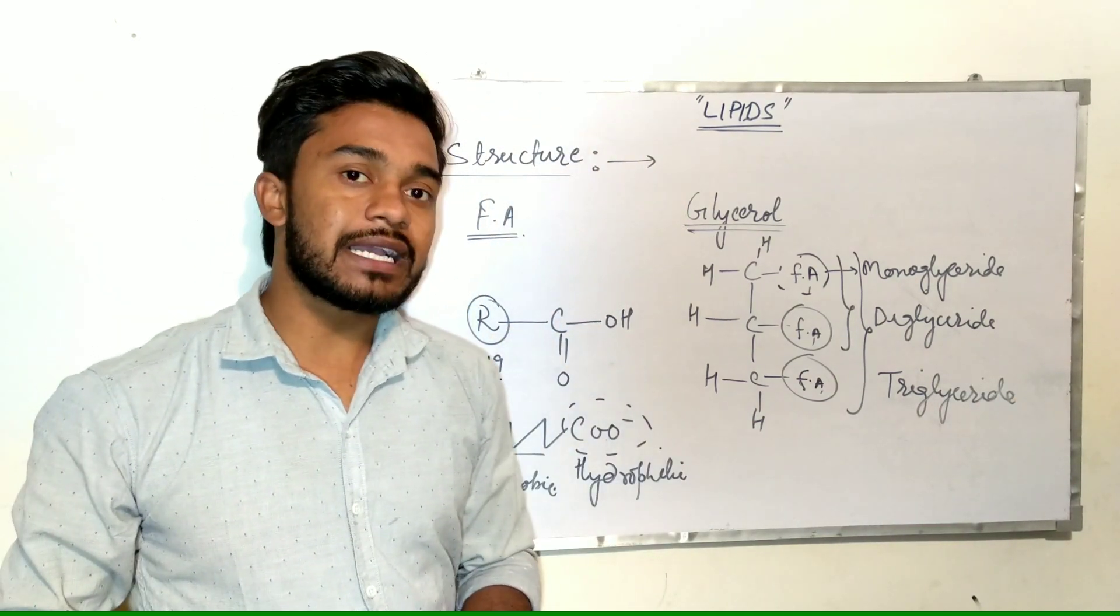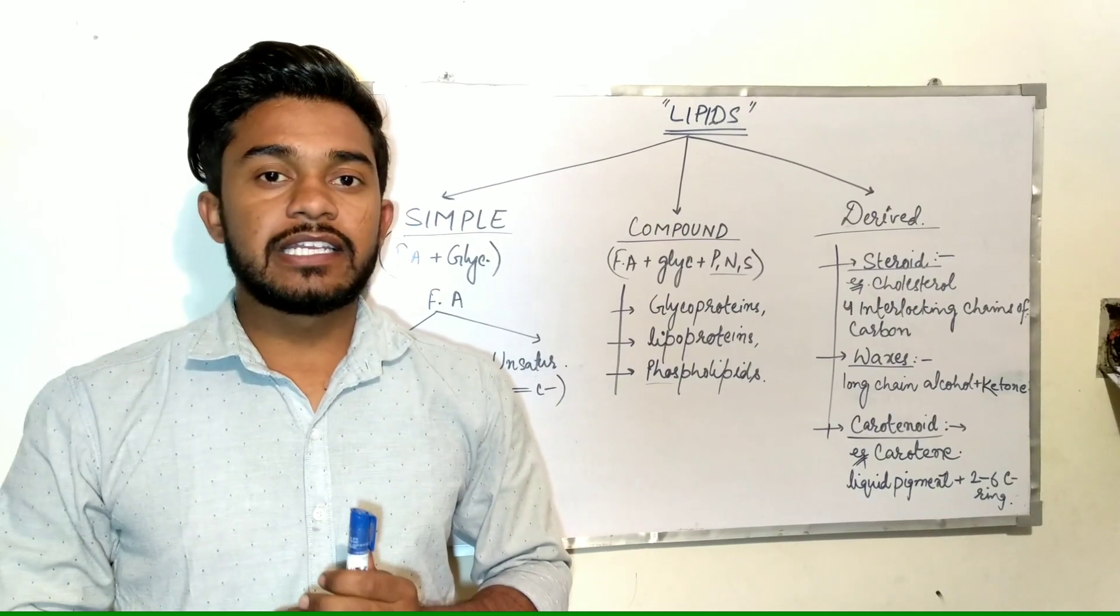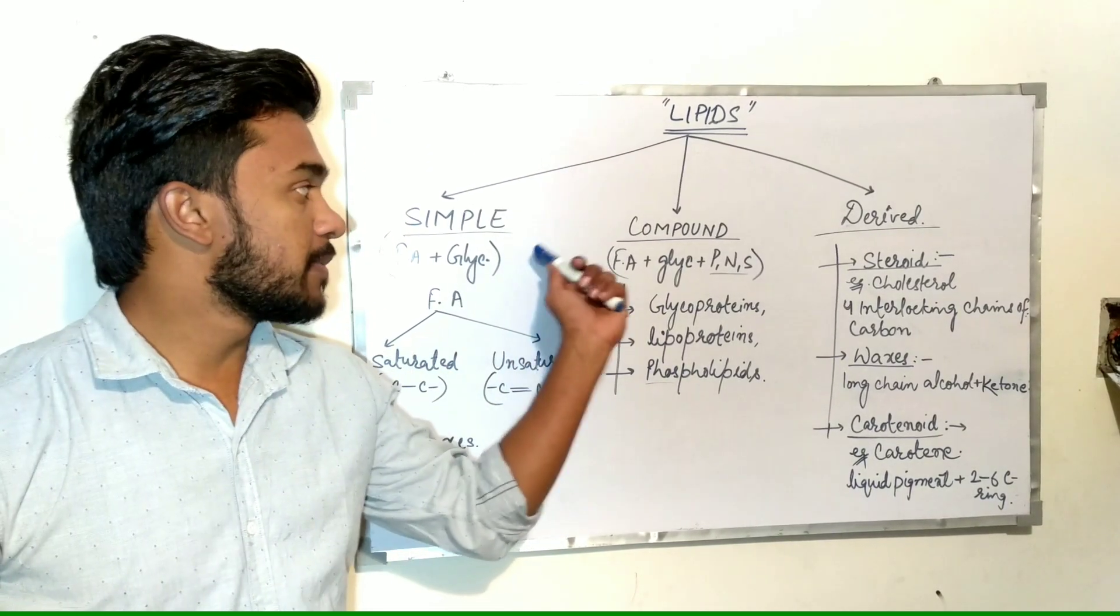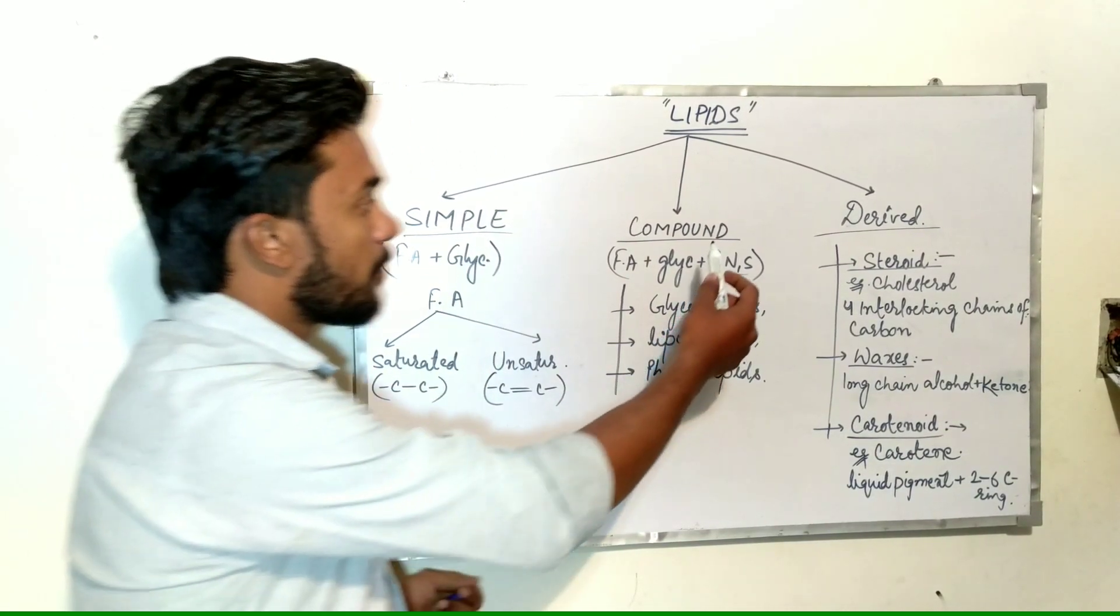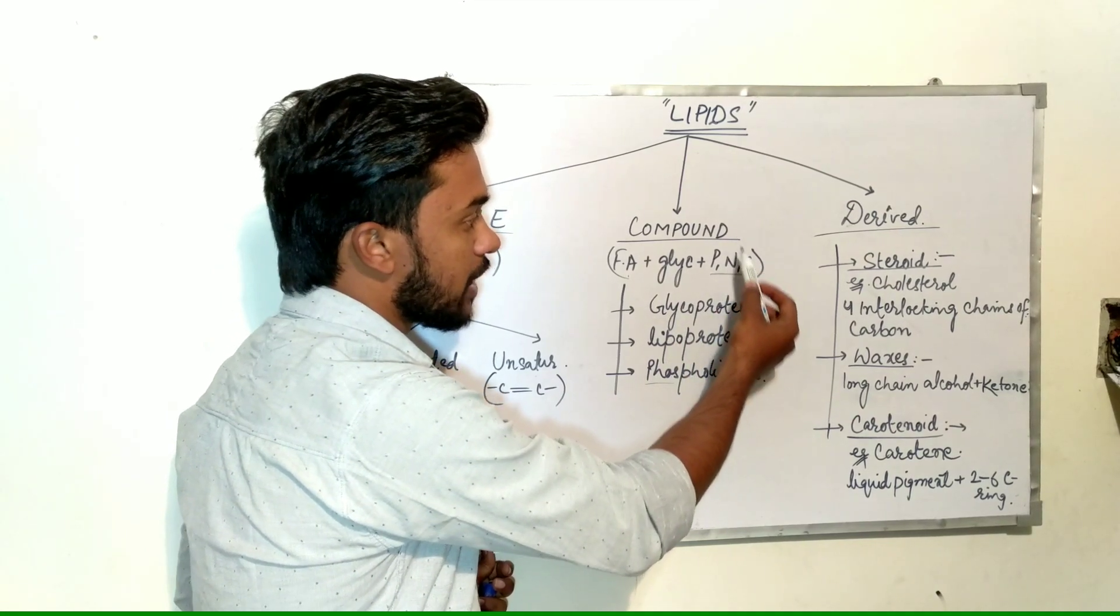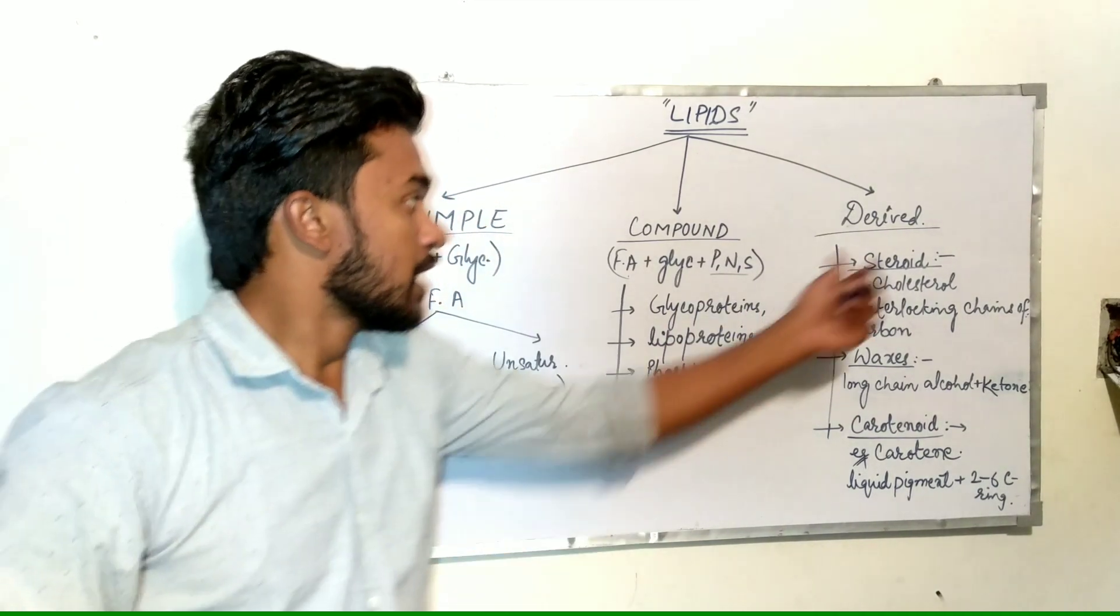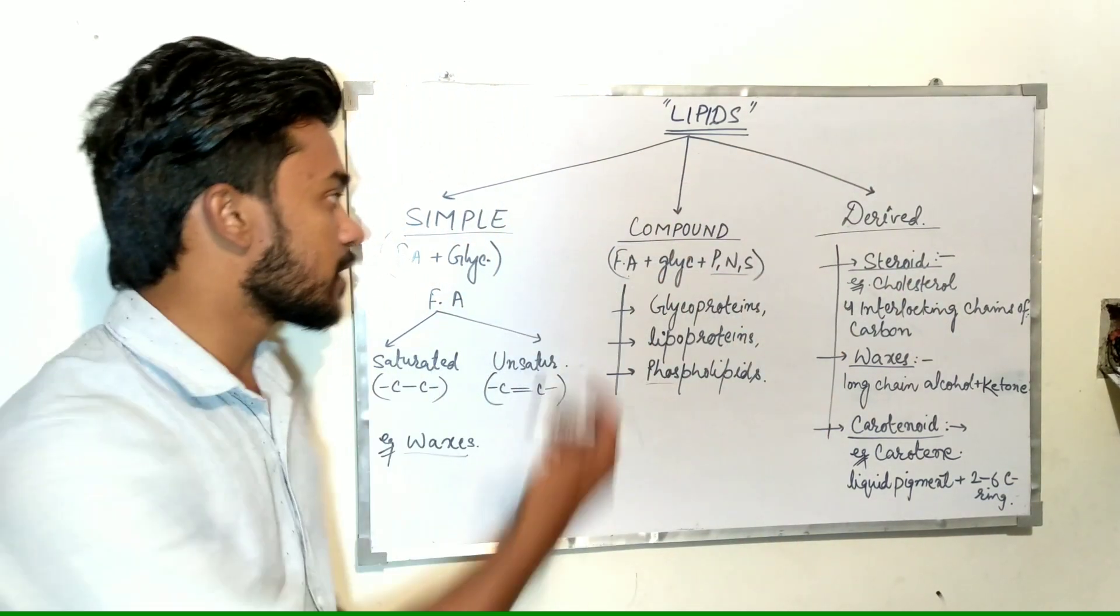Now we will discuss the classification of lipids and their functions. Basically, lipids can be classified into simple lipids, compound lipids, and derived lipids. Simple lipids contain only fatty acid and glycerol. Compound lipids contain fatty acid, glycerol, plus phosphorus, nitrogen, or sulfur in their structures. Derived lipids are simply the derived form of compound and simple lipids.